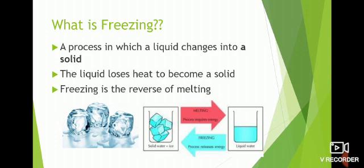In freezing, the liquid loses heat to become a solid — so it's the reverse of melting. For example, when we cool down water, it changes into its solid form, which is ice. What actually happens is the molecules of the water lose heat, which is why they change into the solid state.